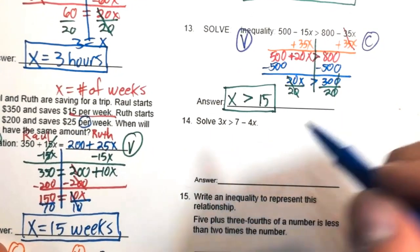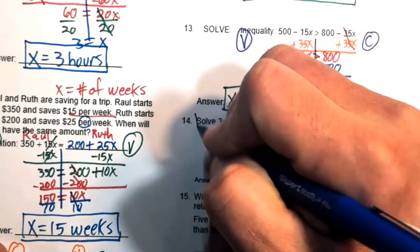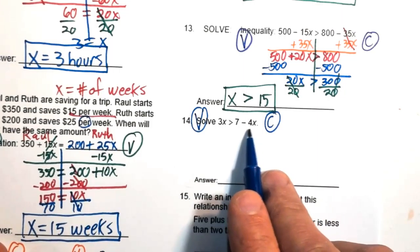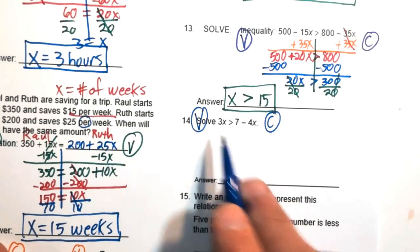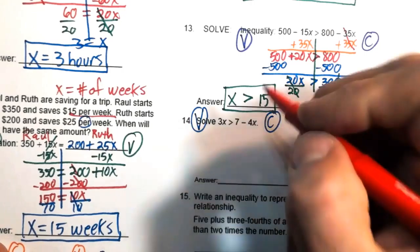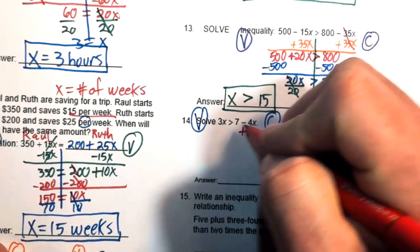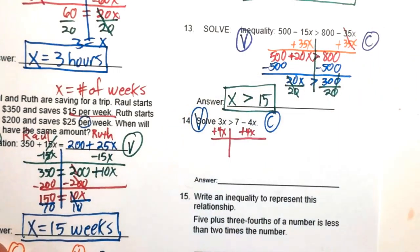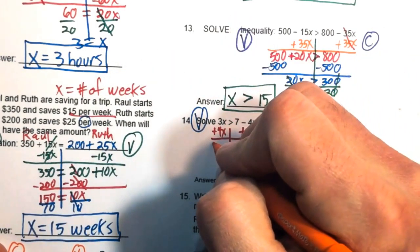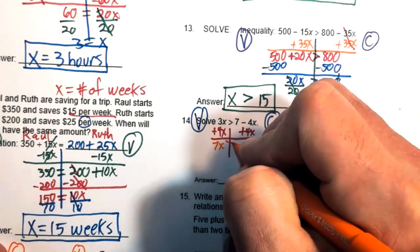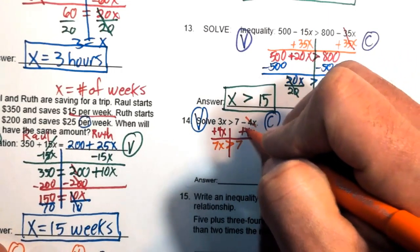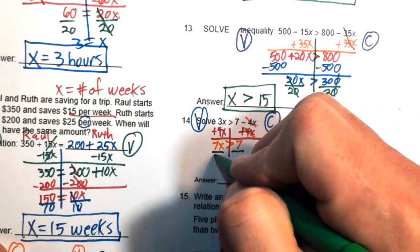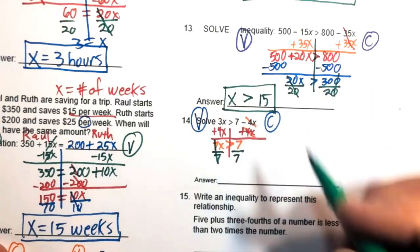Number fourteen: move the negative 4x to the left by adding 4x to both sides. That turns it positive. 3x plus 4x is 7x, greater than 7, and the negative 4x cancels. Divide both sides by 7 — no sign flip since we divide by positive. x is greater than 1.